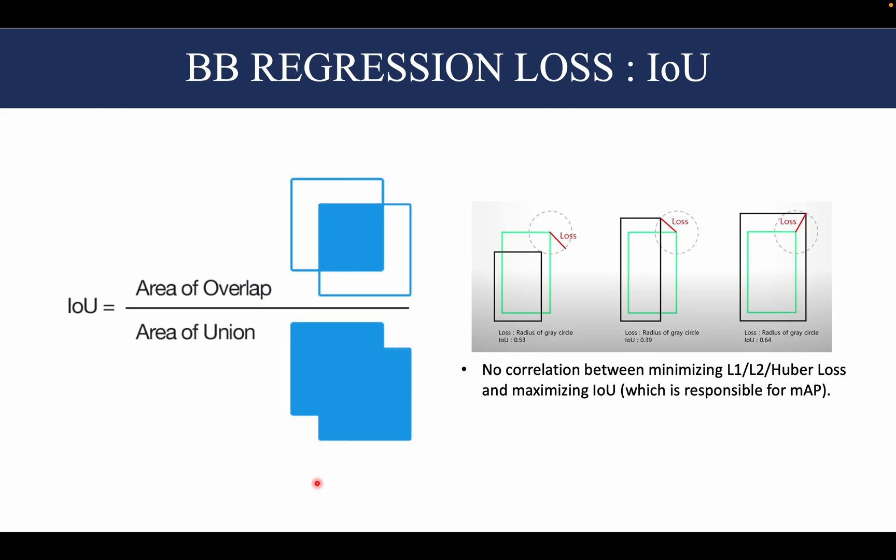So we had talked about IoU before. IoU would be the area of overlap between your ground truth bounding box and the predicted bounding box—that is, this area—divided by the area of their union, that is, this area.